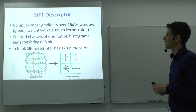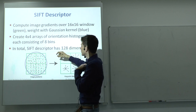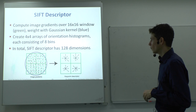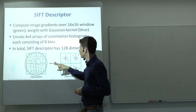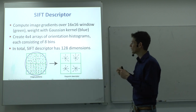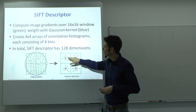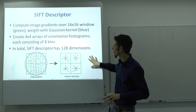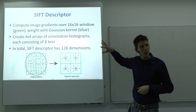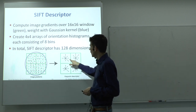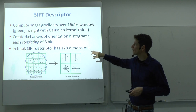SIFT then extracts the feature descriptor by computing image gradients over a 16×16 window. It splits the patch into a 4×4 array of cells, and in each cell computes an orientation histogram. The counts in these histograms form the SIFT descriptor — 4×4 cells times 8 orientation bins gives 128 dimensions total.